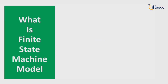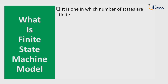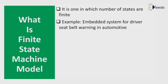Now let's see what is a finite state machine model. A finite state machine is a model in which the number of states are finite. For example, an embedded system for a driver seat belt warning in an automobile, or an automatic car system.